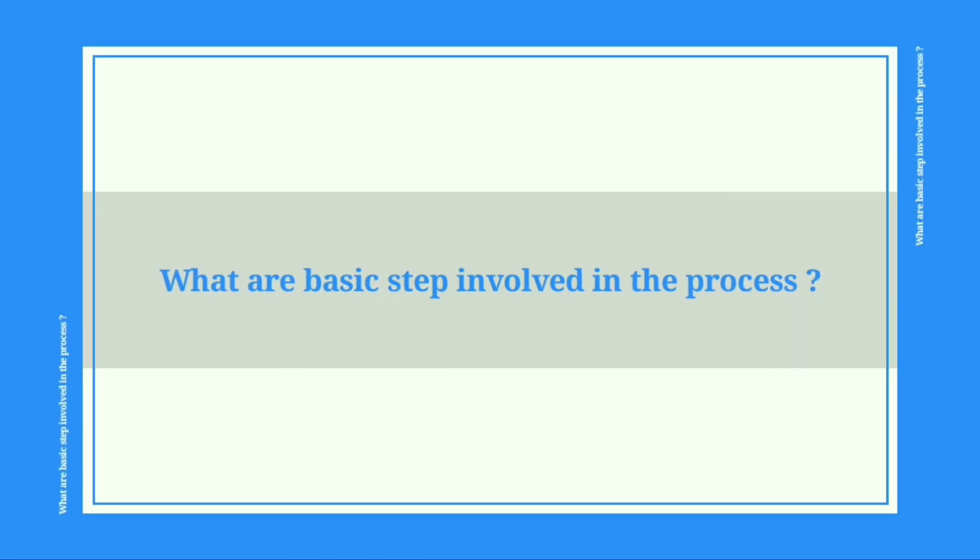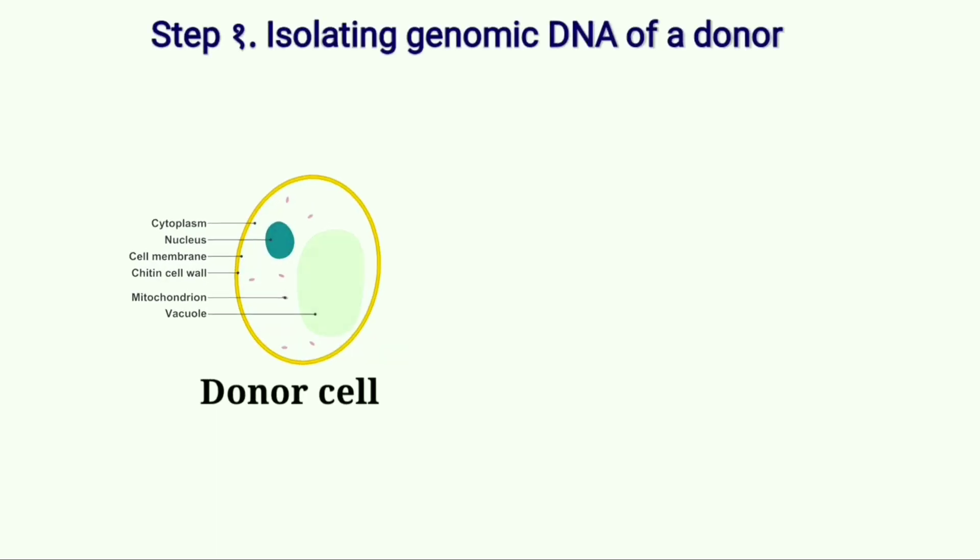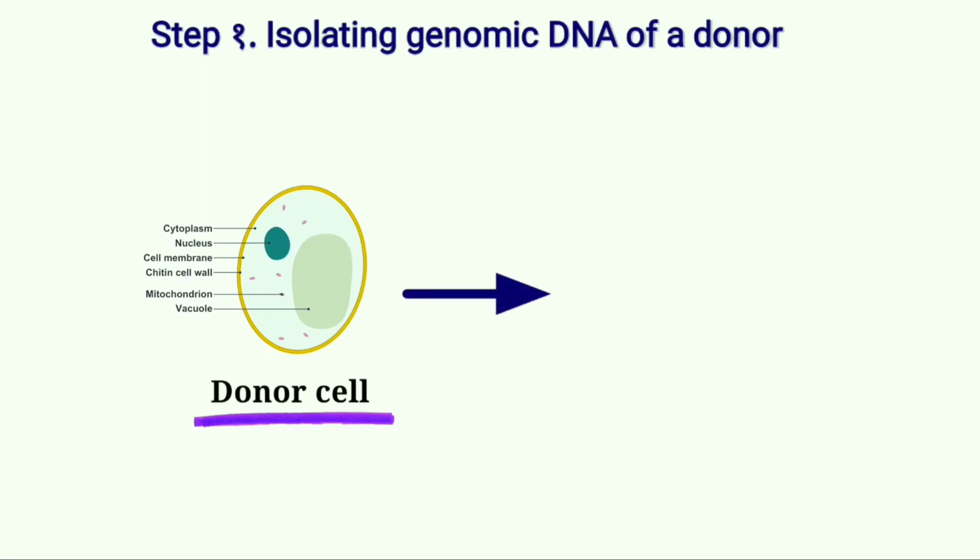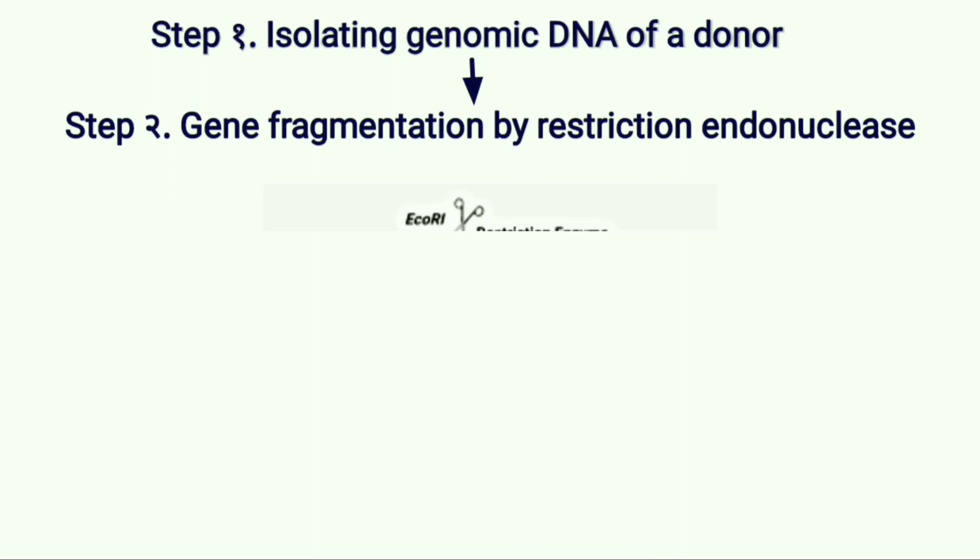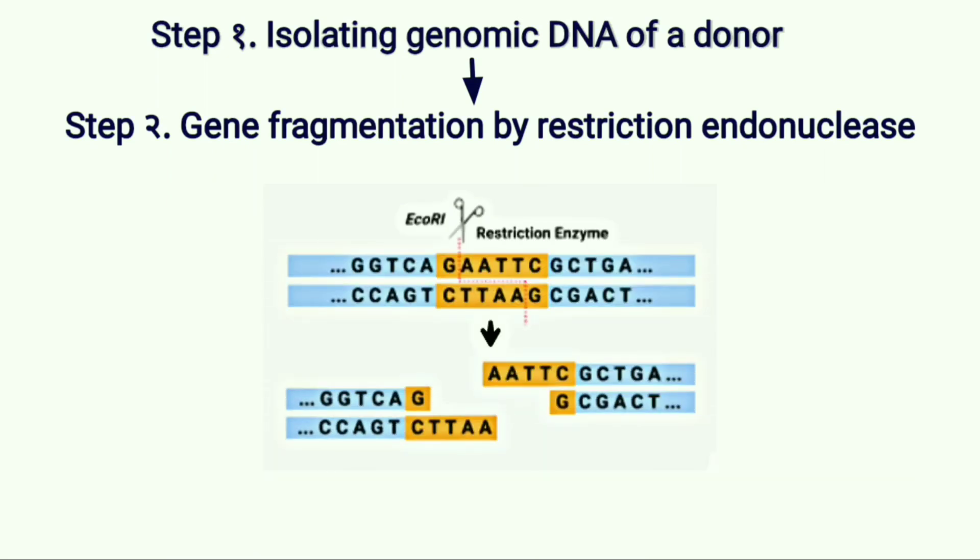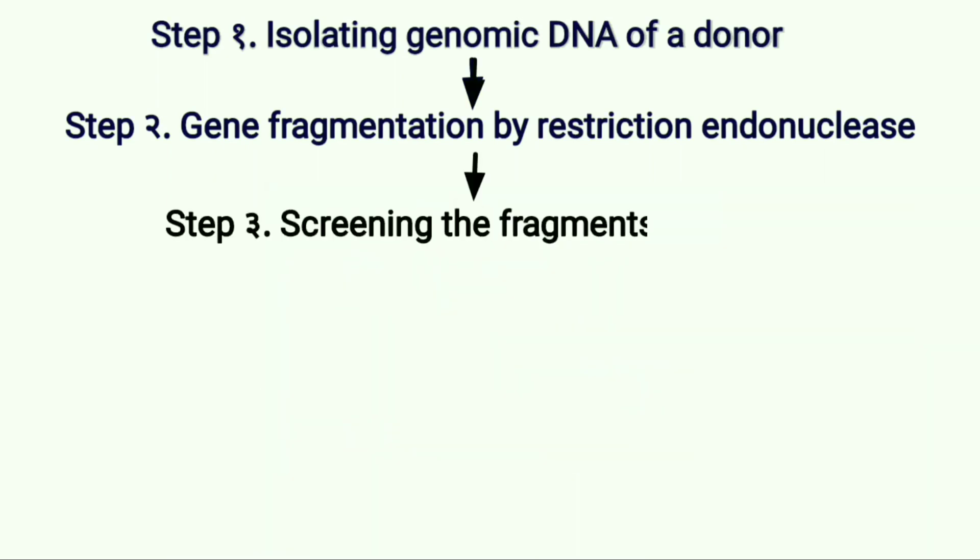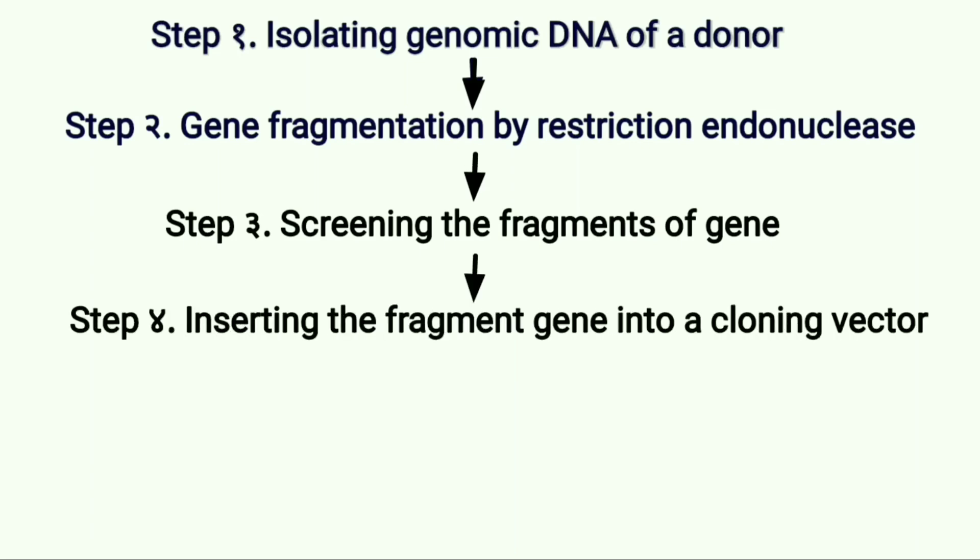What are basic steps involved in the process? Isolating genomic DNA of a donor. The donor is the organism which contains the required gene. Then, we will fragment the gene with the help of molecular scissor which is enzyme. Screening the fragment of the gene. Inserting the fragment with the desired gene into a cloning vector.